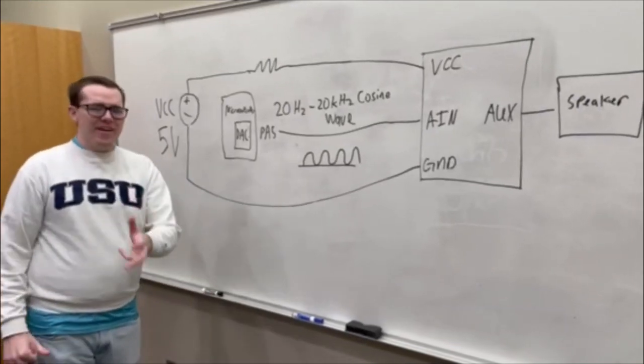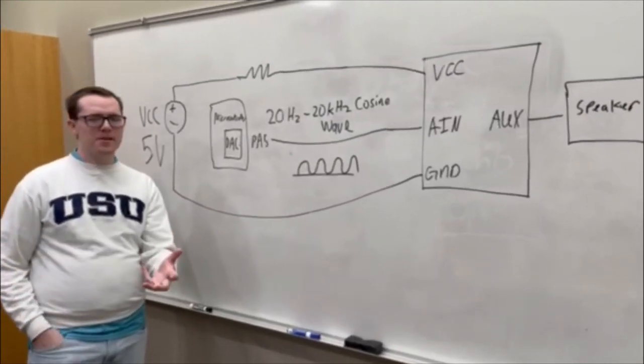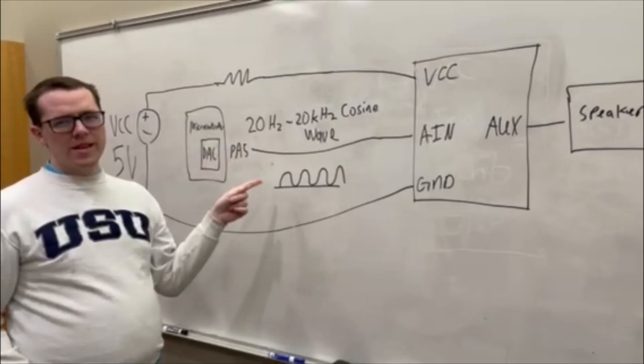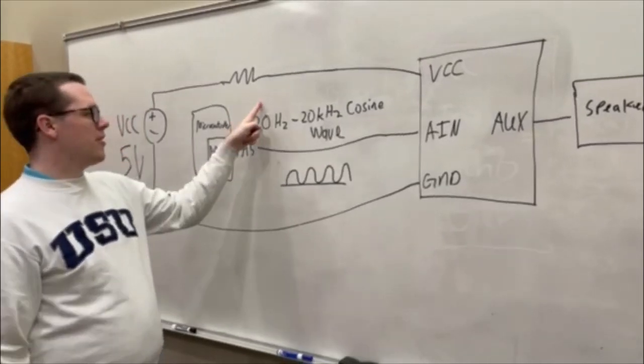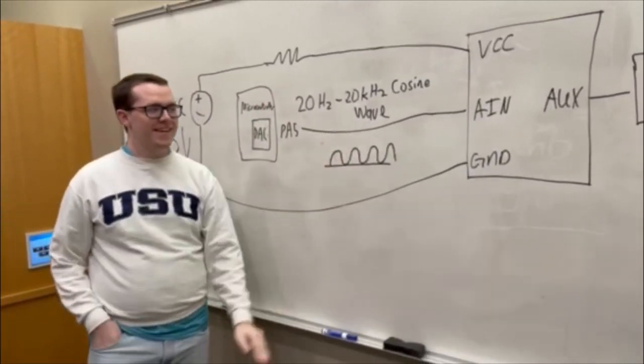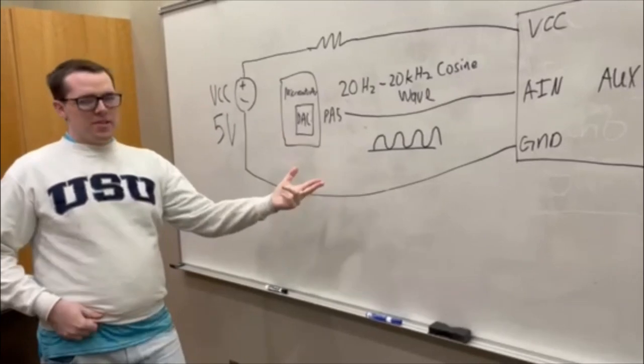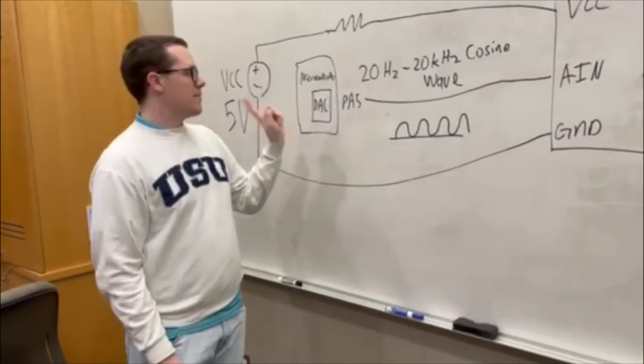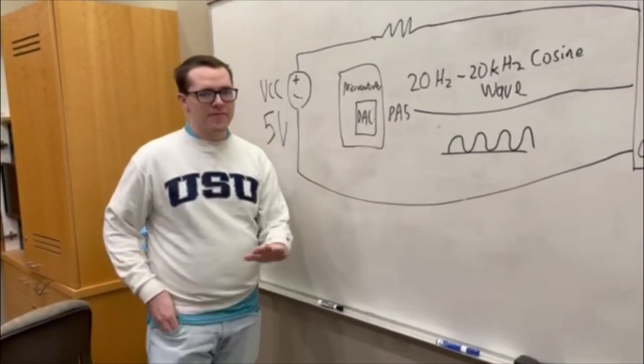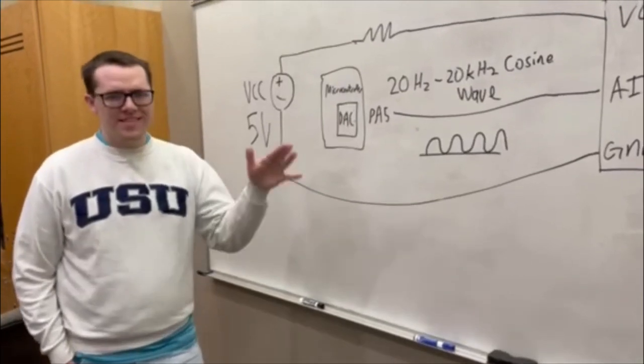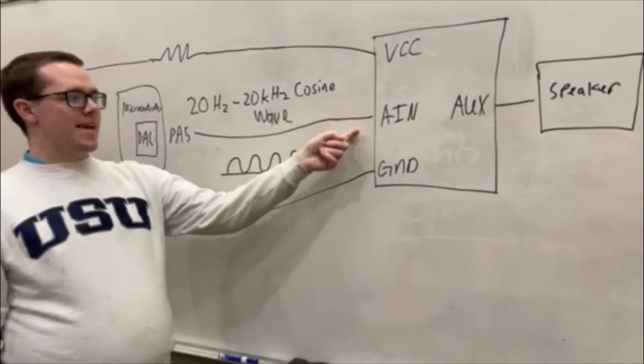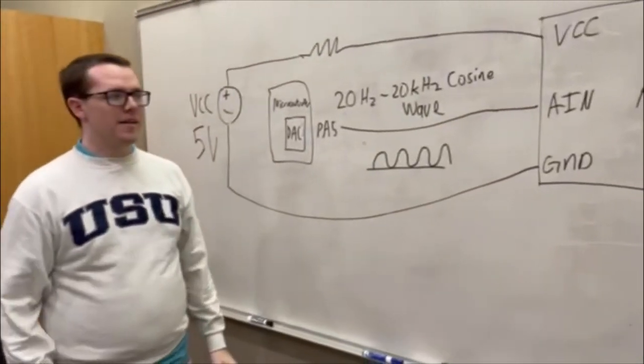I was responsible for the audio output to the speaker. We provide an analog signal within the human audible range from 20 hertz to 20 kilohertz using a cosine wave. We produce this cosine wave by interfacing with the digital-to-analog converter on the microcontroller to convert digital data to an analog signal, which we output to the AN pin on our PMOD.